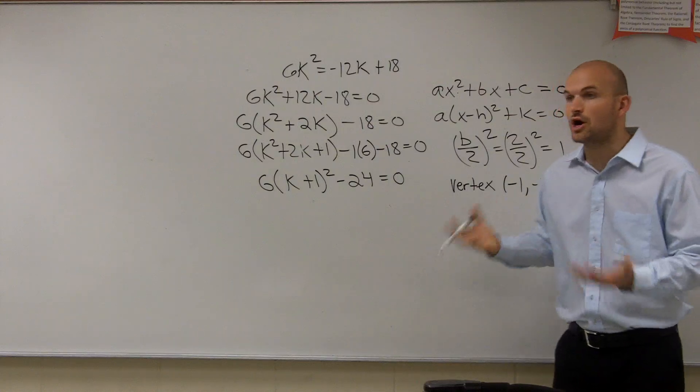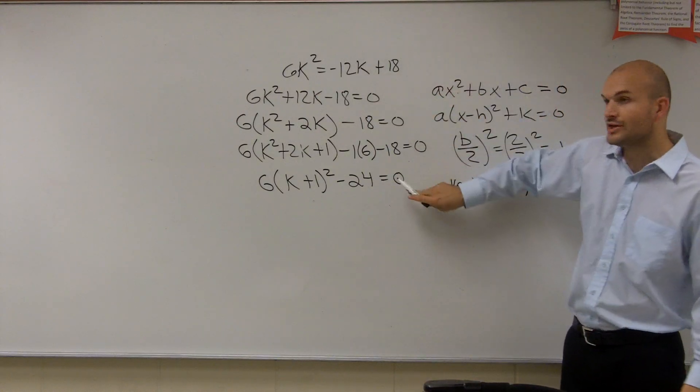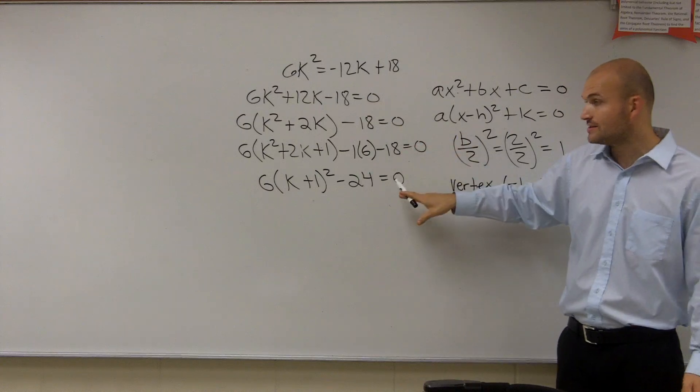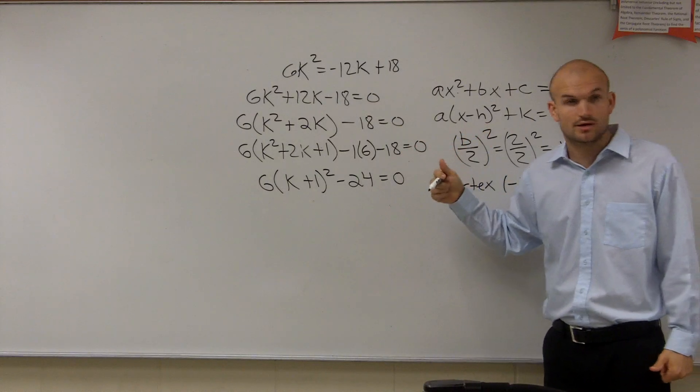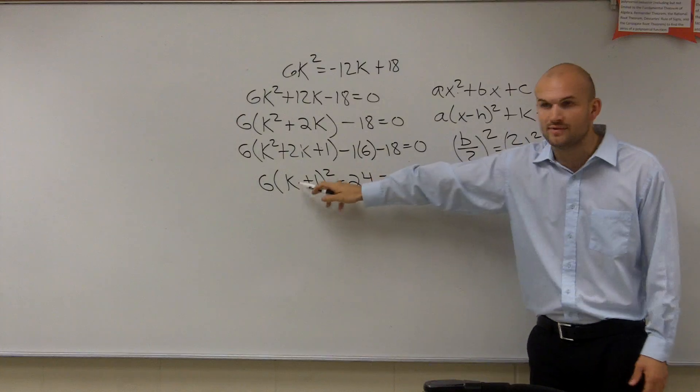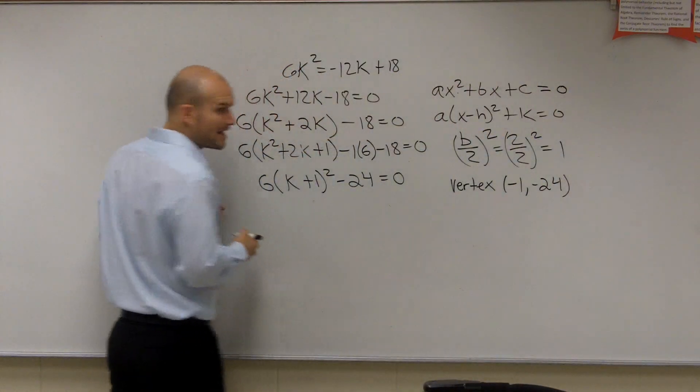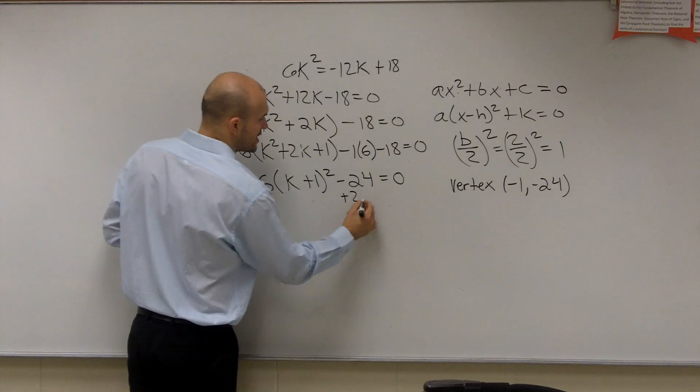So the next thing we need to do is solve for the x-intercepts. And remember, the x-intercepts are when your y-value equals 0. Fortunately, already in this equation, we have the y-value equals 0. So now what we need to do is just solve for k. We need to isolate the variable. So we need to undo addition and subtraction first. So I'm going to undo subtraction of 24.